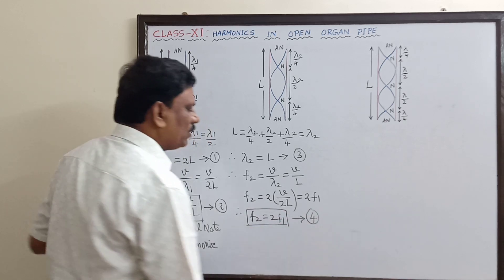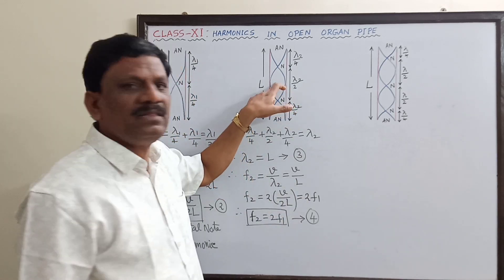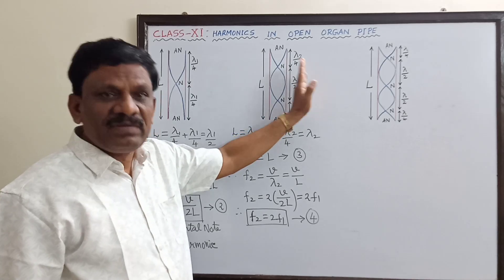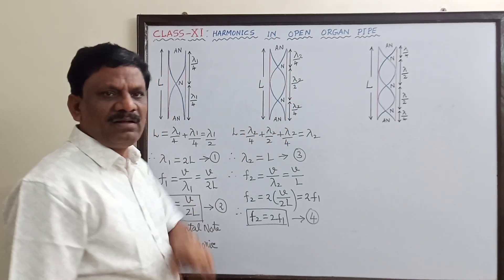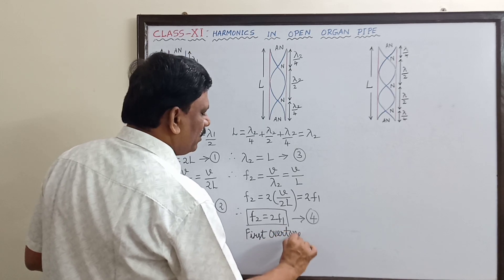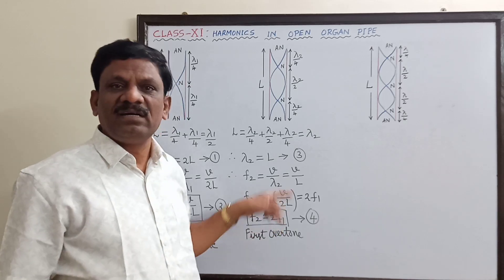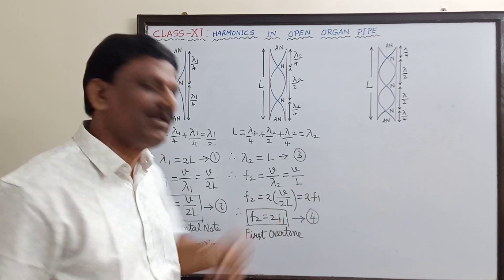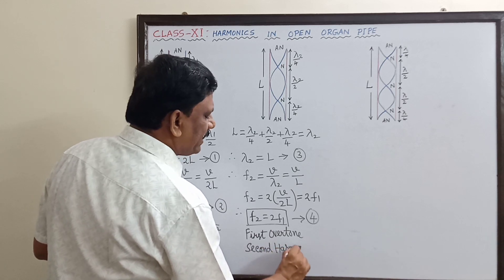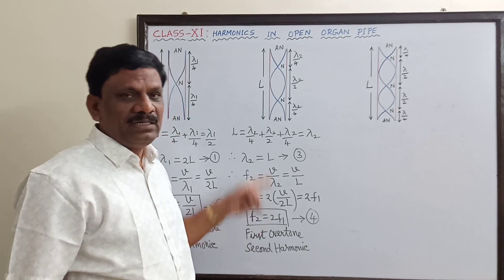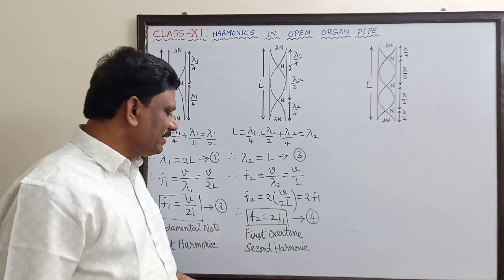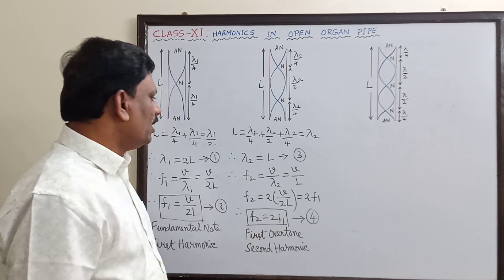The frequency of vibration in this mode is f₂ = 2f₁. Since this is the first repetition of the fundamental, it is called the first overtone. It is also called the second harmonic because it is twice the frequency of the fundamental. In the case of the closed pipe we got three times f₁ for the first overtone, so it was called the third harmonic, but here it is the second harmonic because it is 2f₁.